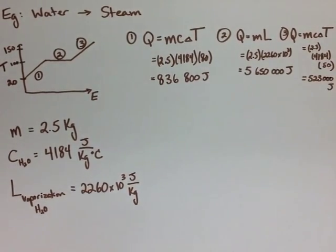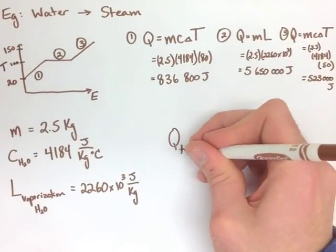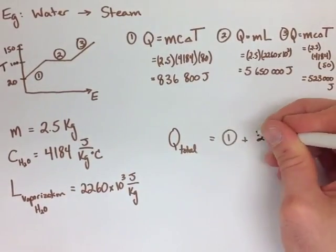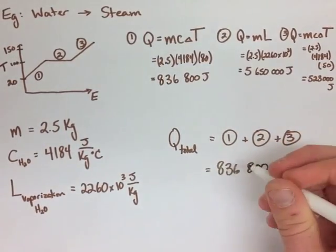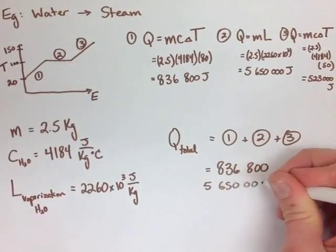Now the total thermal energy we need for this whole system, well we have to add all of these together. When we do that, we end up getting 7,900,800 joules of energy.